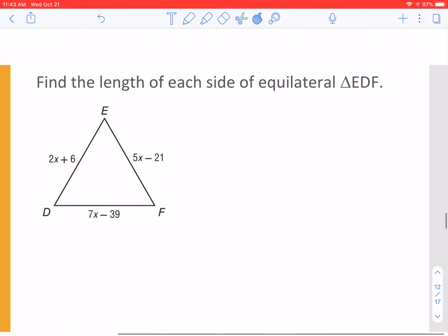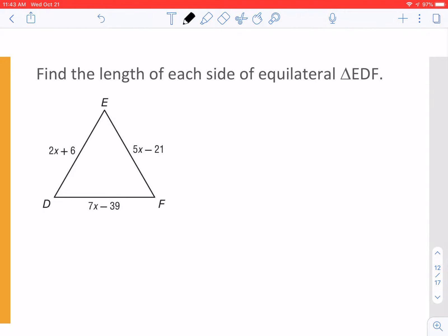Now, a couple algebra problems. This says, find the length of each side of equilateral EDF. If it's equilateral, then I'm going to mark my triangle. We always mark our triangles. We're going to be dealing with triangles for a while. And they are all equal. All I need to do is pick two sides for the algebra and set them equal. So I'm going to do 2X plus 6 equals 5X minus 21.